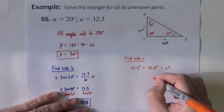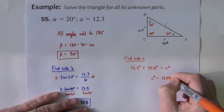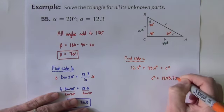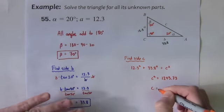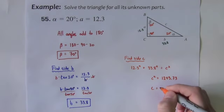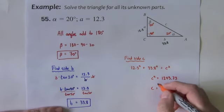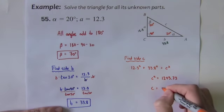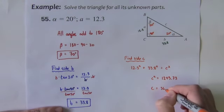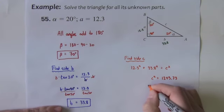So that gives me C squared equals 1293.73. If I take the square root of that, I get 36.0.